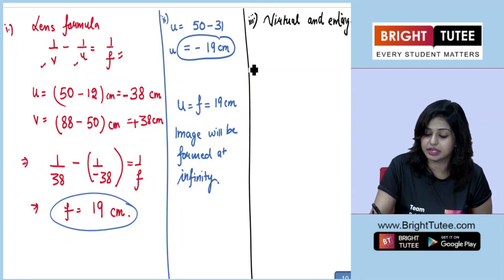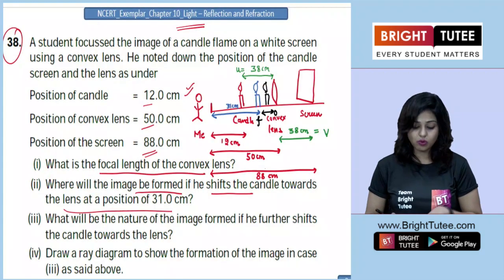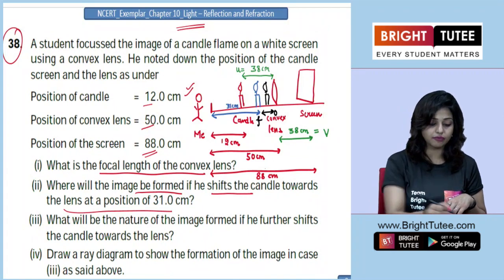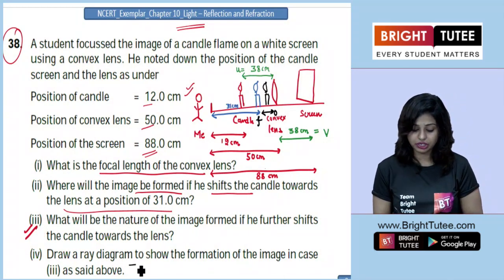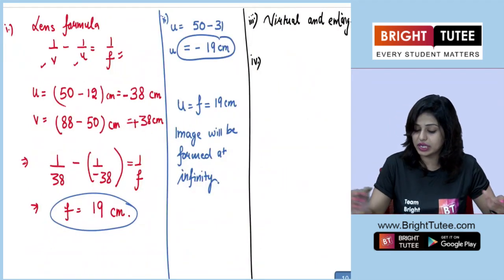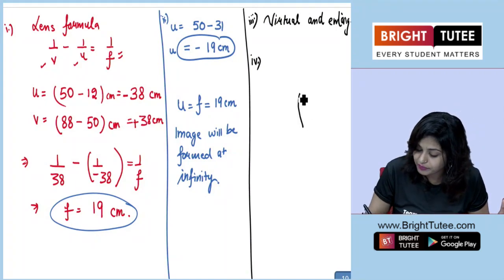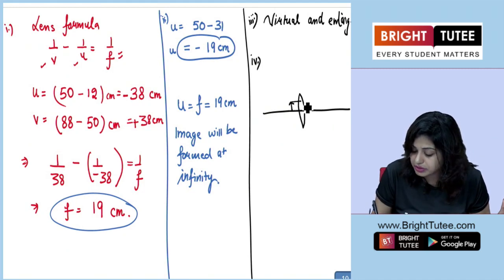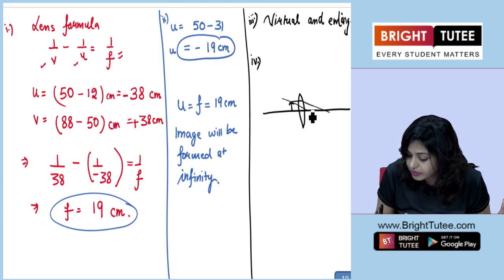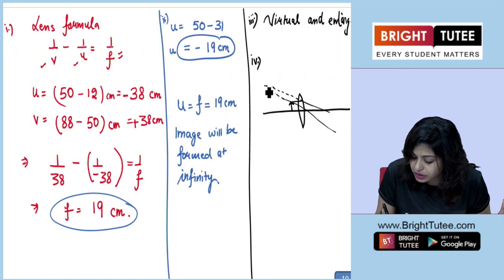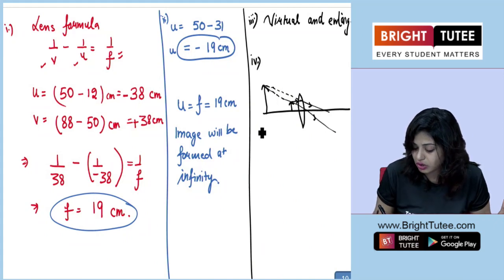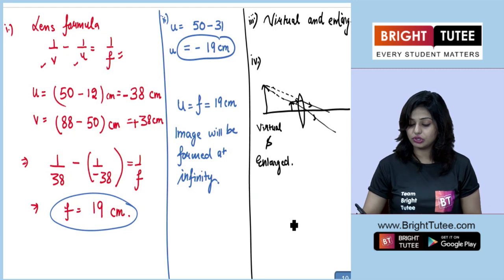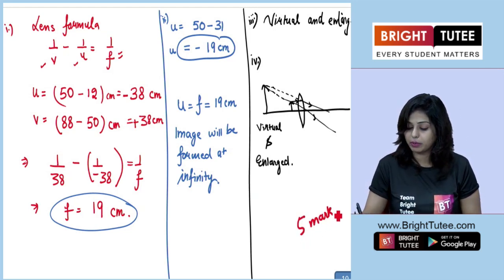Part 4 is related to part 3. Once you know what you get in part 3, you have to draw the ray diagram to show the image formation. You construct your lens, place your object between F and O, draw the rays — one parallel to the principal axis refracting through the focus, and another through the optical centre. On extending the refracted rays back, your virtual and enlarged image will be observed. Don't forget to mark the arrows. This gives you all 4 parts and the full 5 marks.